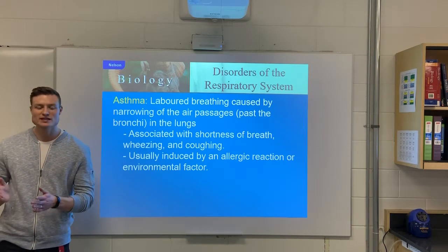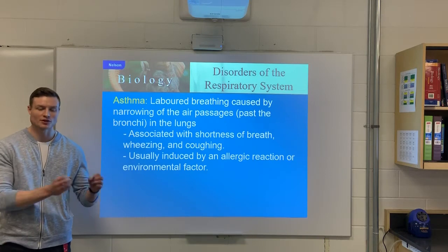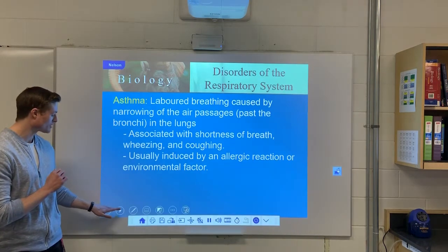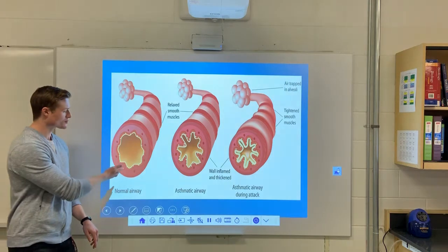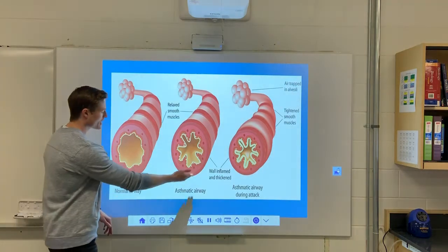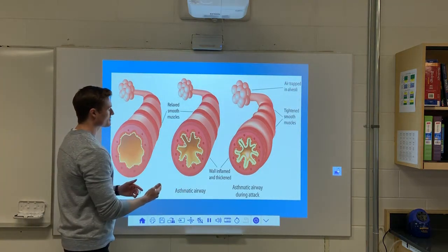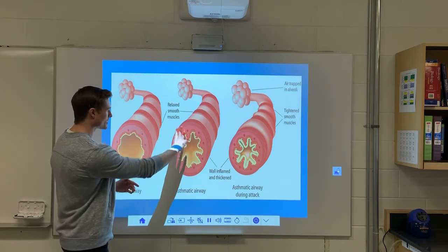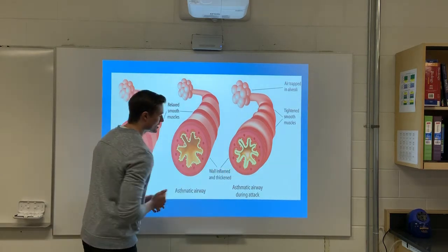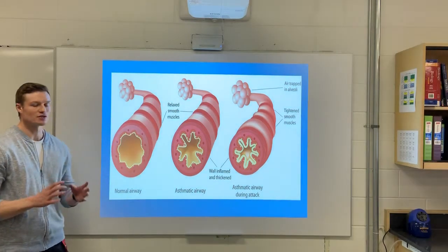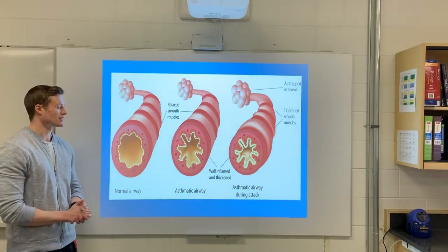Asthma can range from moderate — where you get a little wheezy around dry grass — to pretty severe, where your airways actually close up and you have a very tough time breathing. A normal airway versus an airway during a regular asthmatic episode still has some room, but during a full asthma attack the airways become really constricted, which can be very dangerous.